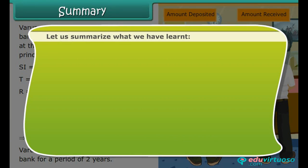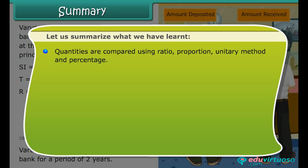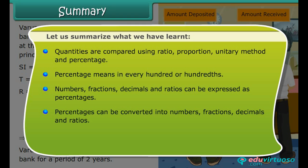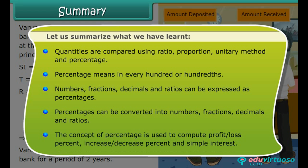Summary: Quantities are compared using ratio, proportion, unitary method and percentage. Percentage means 'in every hundred' or 'hundredths'. Numbers, fractions, decimals and ratios can be expressed as percentages, and percentages can be converted into numbers, fractions, decimals and ratios. The concept of percentage is used to compute profit or loss percent, increase or decrease percent and simple interest.